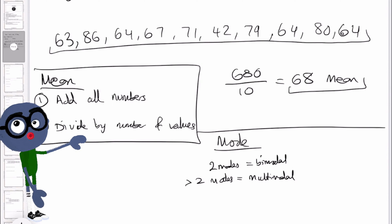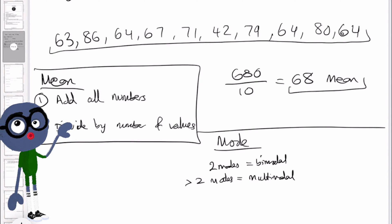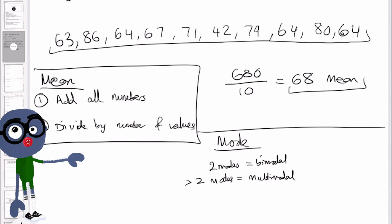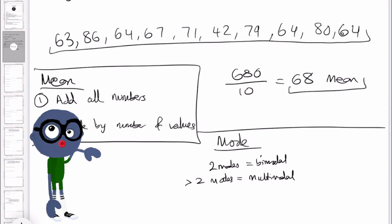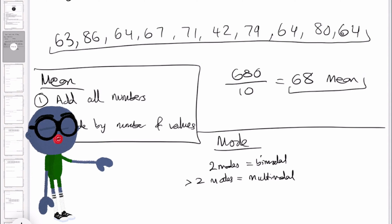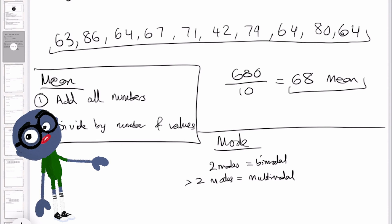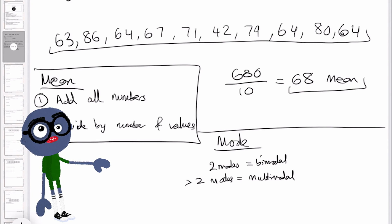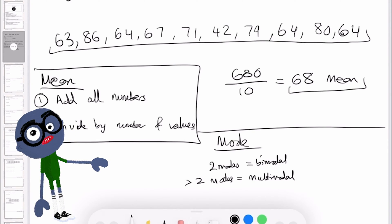If all the values appear the same number of times, we say there is no mode. It is often useful to use the ordered set of numbers — putting all the numbers from smallest to largest — and then see which value occurs more than once. Let's go ahead and do this right away.